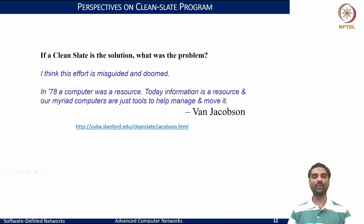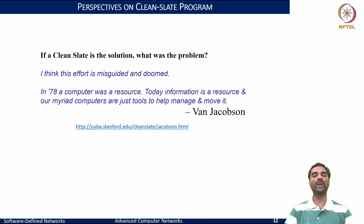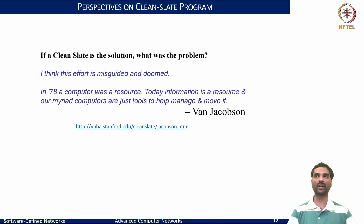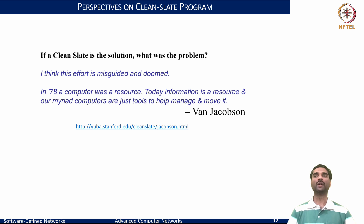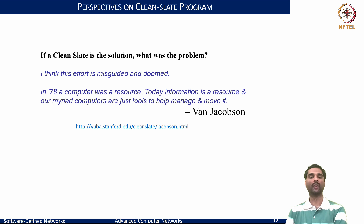Nonetheless, this project also saw detractors questioning why we should be taking a clean slate approach. Van Jacobsen voiced that this effort is misguided and doomed. He argued that when you see the evolution of the internet, the early principles put forth by Vint Cerf and Bob Kahn in the early 70s were so elegant that they facilitated what we see today as a large-scale internet infrastructure. Many applications have emerged because of those clean solutions from the end-to-end principle. So in what sense should we be going forward in addressing these problems — that was exactly the concern.